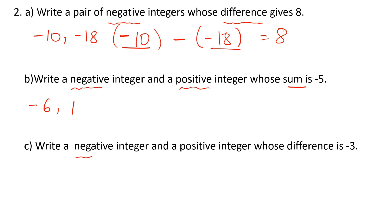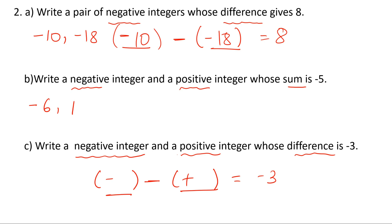Next one: write a negative integer and a positive integer whose difference is minus 3. So we need a negative integer minus a positive integer equals minus 3. The answer could be minus 1 and 2. Solving it: minus 1 minus 2 equals minus 3, because minus and plus would become minus. So minus 1 minus 2 equals minus 3. The answer for this is minus 1 comma 2.